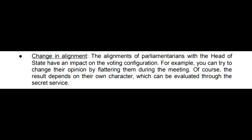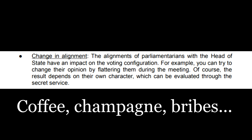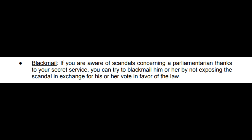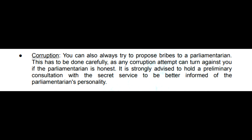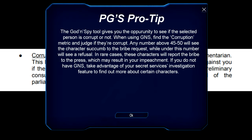The second one is a change in alignment. The alignments of parliamentarians with the head of state have an impact on the voting configuration. For example, you can try to change their opinion by flattering them during the meeting. Of course, the result depends on your own character, which can be evaluated through the secret service. The third one is blackmail. If you are aware of scandals concerning this parliamentarian thanks to your secret service, you can try to blackmail him or her by not exposing the scandal in exchange for his or her vote in favor of the law. The fourth one is corruption. You can also try to propose bribes to the parliamentarian. This can be done carefully as any corruption attempt can turn against you if the parliamentarian is an honest person. It is strongly advised to hold a preliminary consultation with the secret service to be better informed of the parliamentarian's personality.